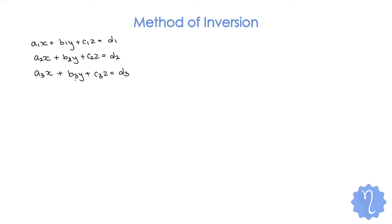If we have a system of equations and need to find x, y, and z, we already have two or three methods. We can use Cramer's rule — dx/d, dy/d, dz/d — but it's a very long method. Besides that, we can try to eliminate coefficients. If we have more variables and equations, it becomes very difficult. Even Cramer's rule using determinants is very difficult in those cases.